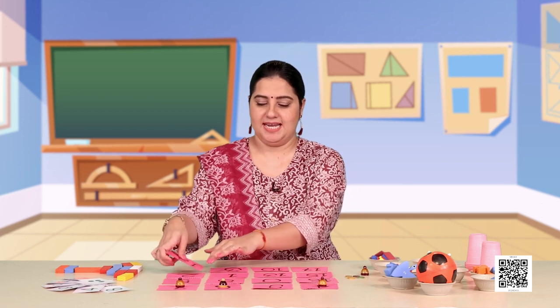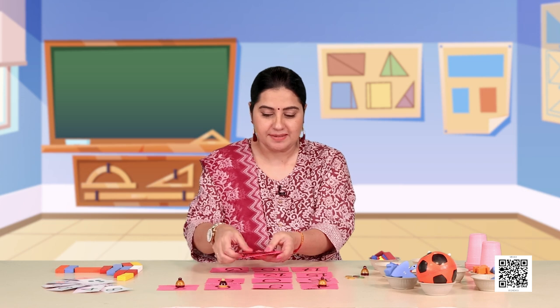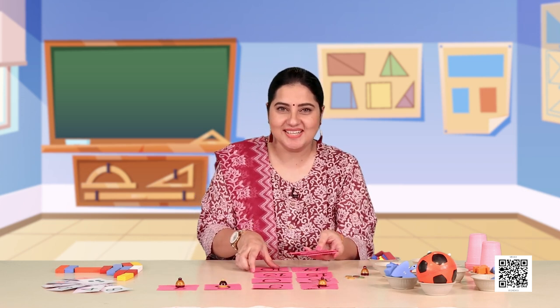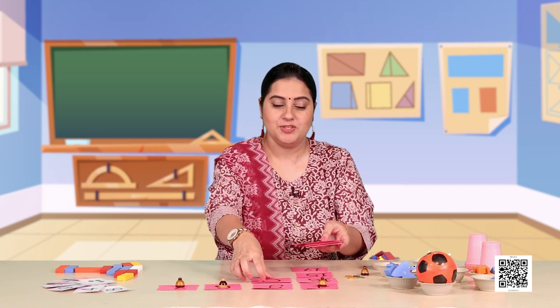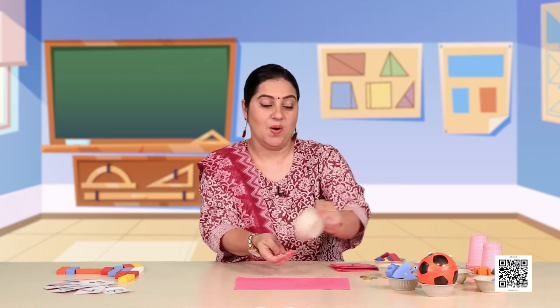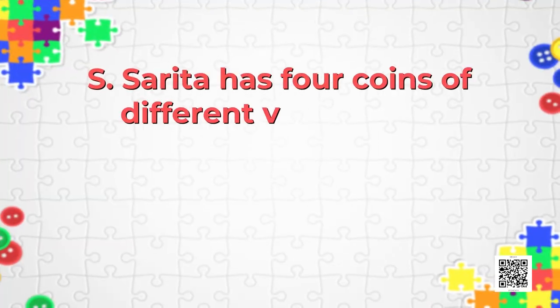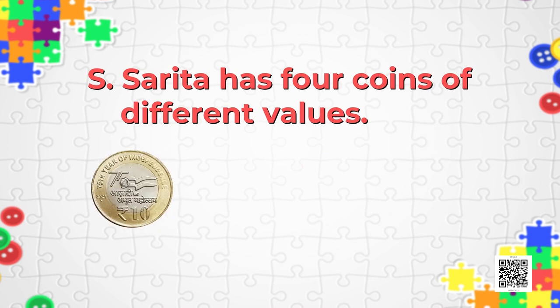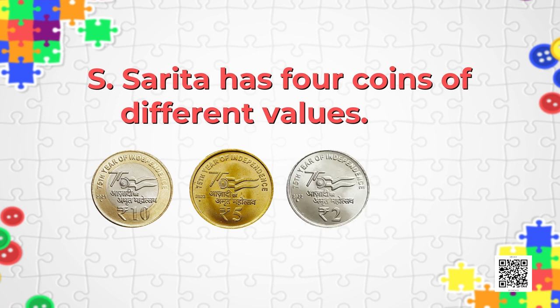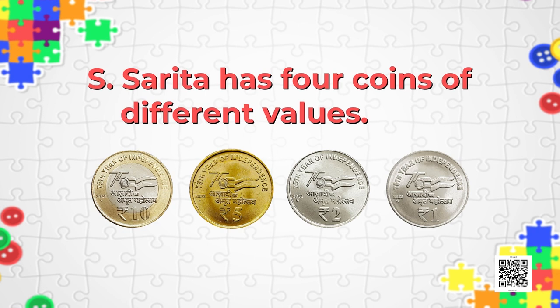After that fun with numbers, something interesting is coming up — it's something related to coins that you use to purchase things from the market. Puzzle S has something very interesting: it uses money. Sarita has four coins of different values — 10, 5, 2, and 1. Sarita is asking: what is the minimum number of coins needed to spend exactly 49?